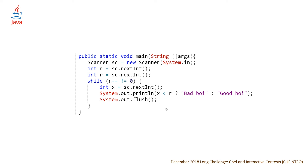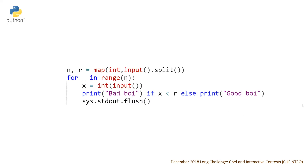System.out.flush() is how you do it for Java. Last but not least, the Python solution — reading in n and r, looping through all n contestants, reading in x, printing "bad boy" if x is less than r otherwise printing "good boy", and then sys.stdout.flush(). Note that to use this you'll need to import sys — I didn't include it in the shown code but you can see it in the GitHub link.